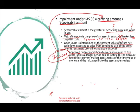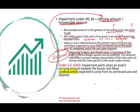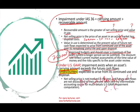Under US GAAP, an impairment exists when an asset's book value exceeds the future undiscounted cash flows — not discounted. The net selling price is not involved in this test under US GAAP, and future cash flows are not discounted to their present value. I'm not going to cover US GAAP in this session — please go to my intermediate accounting course, chapter 12, for over an hour on asset impairment under US GAAP.